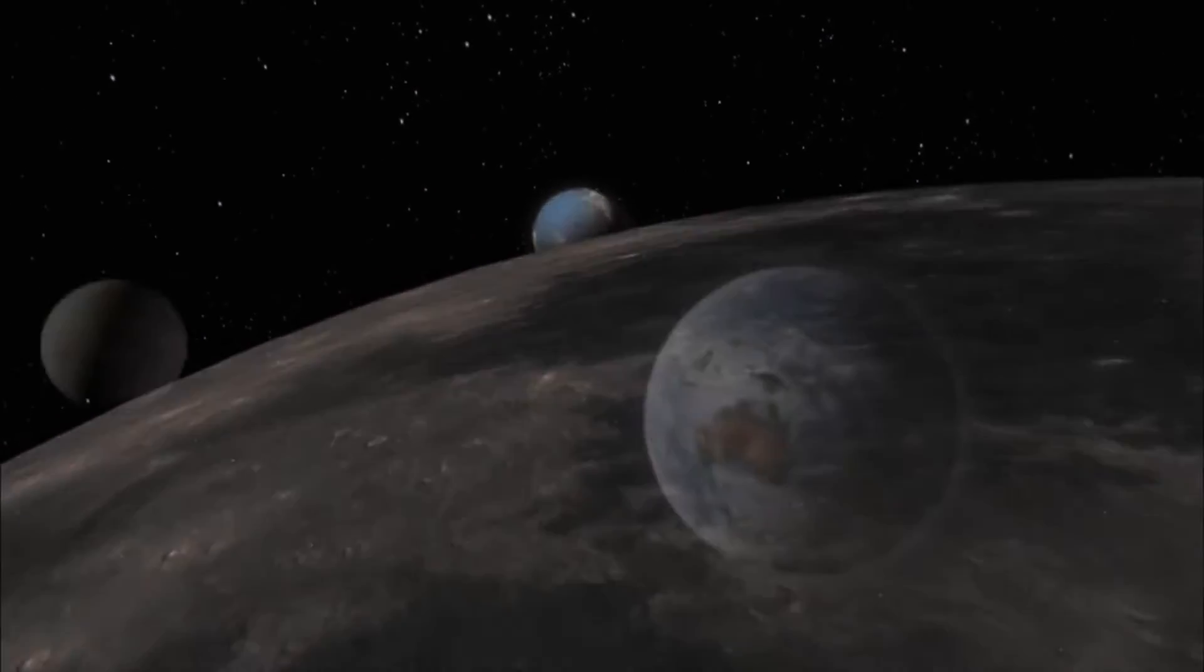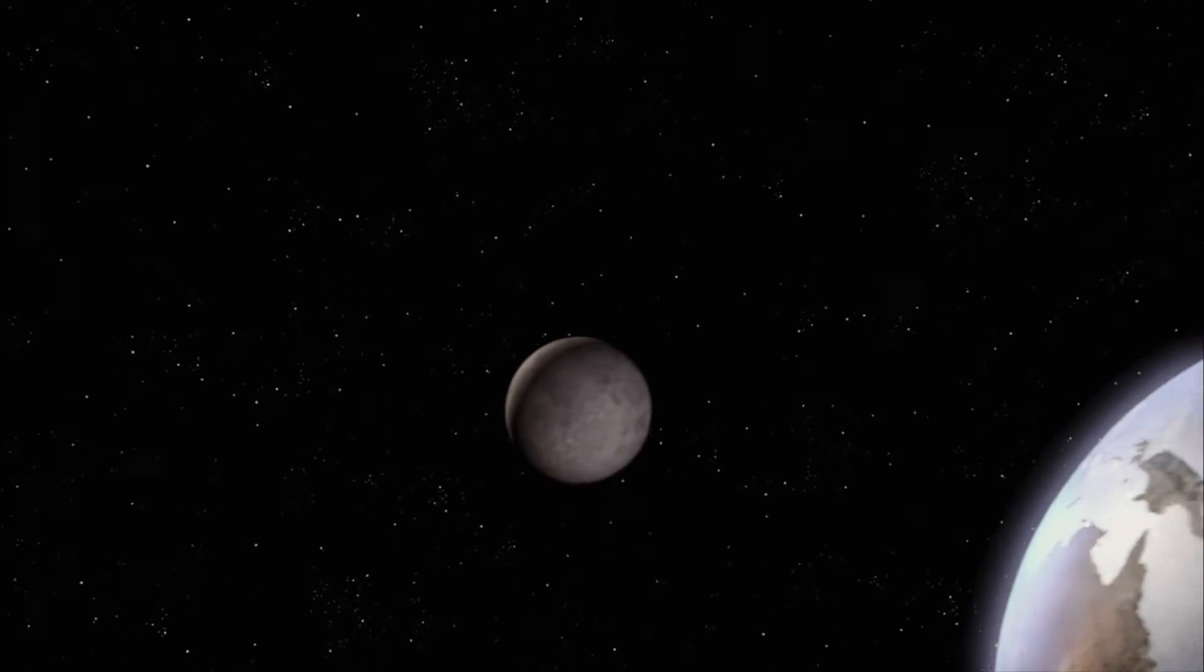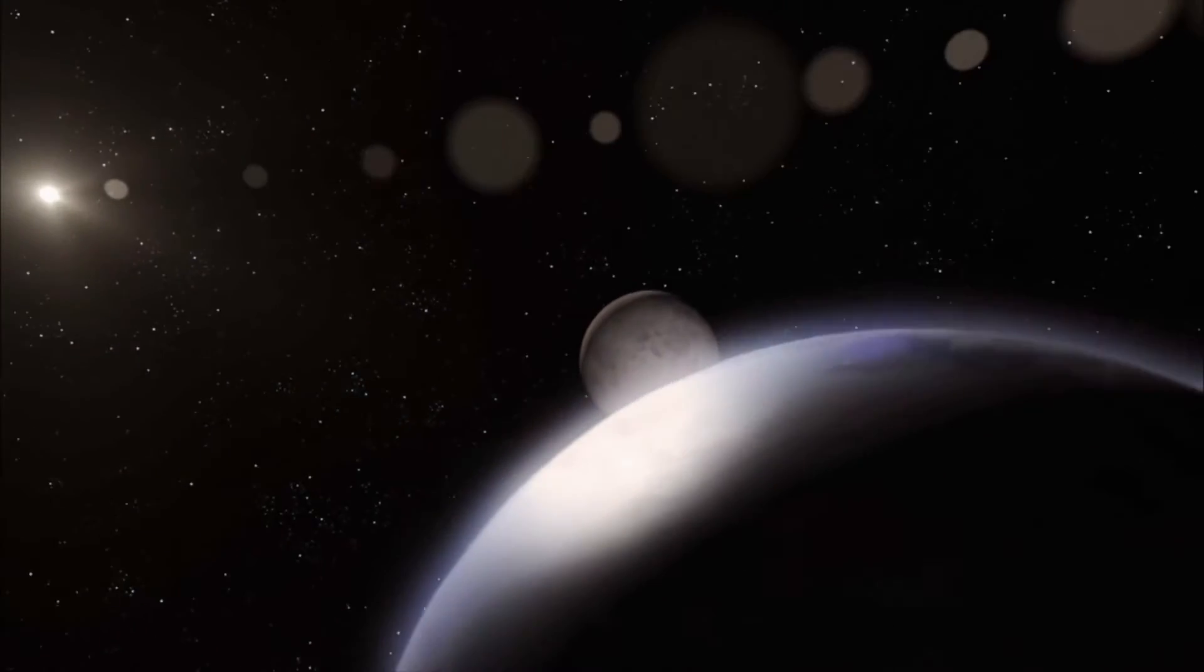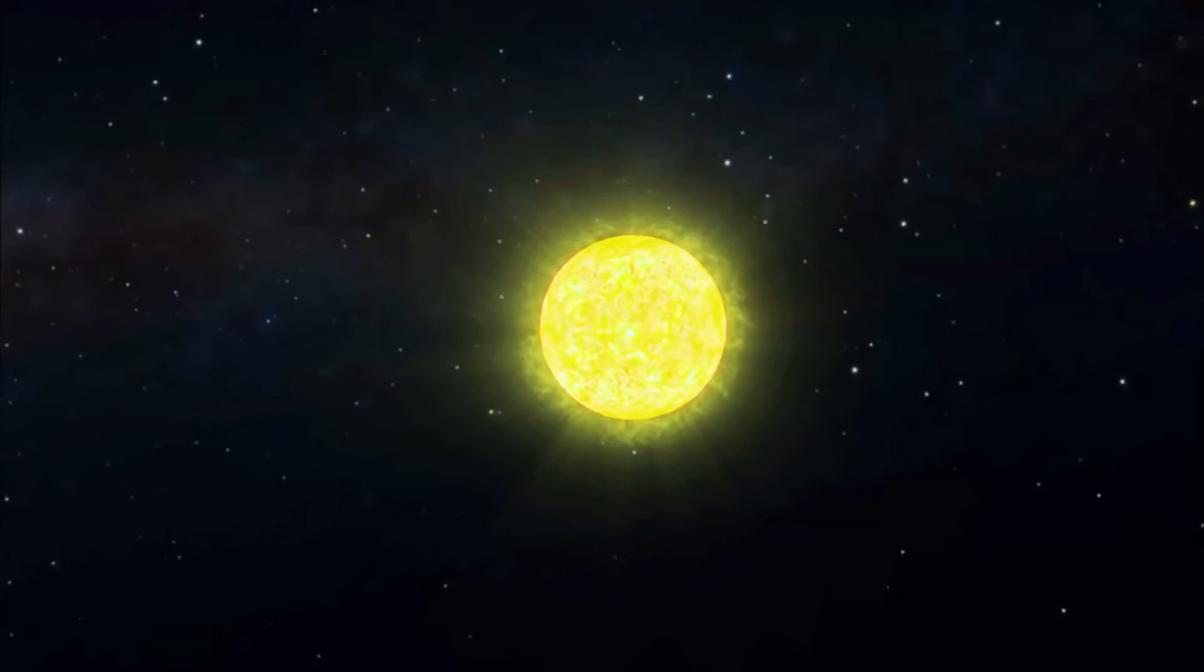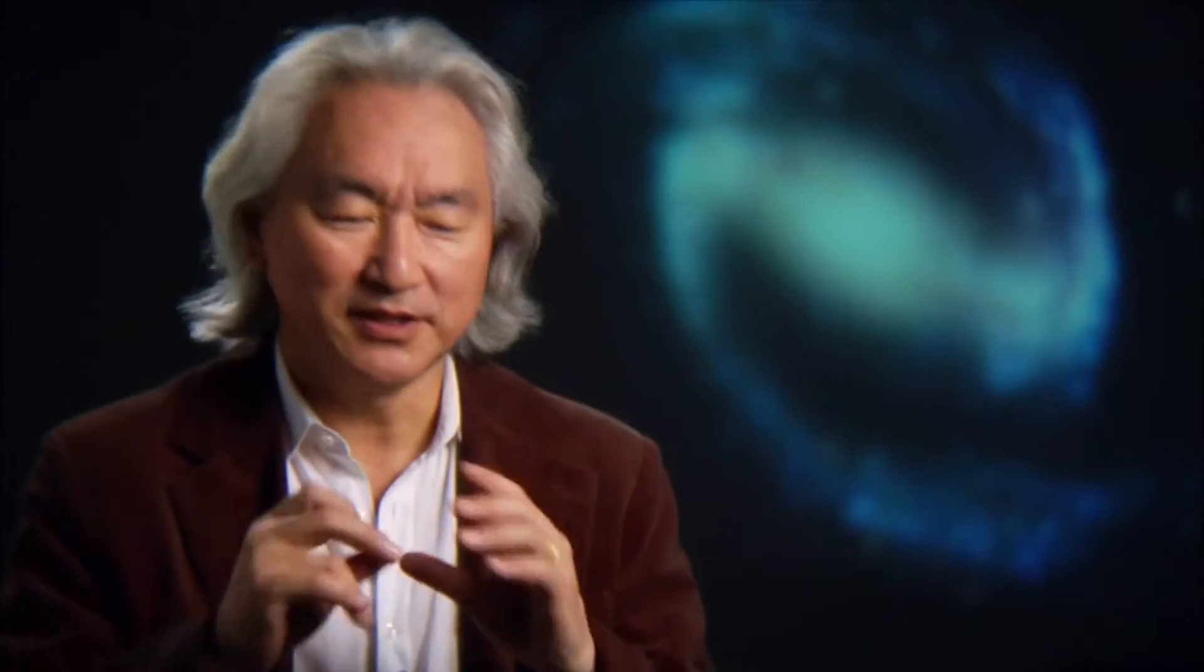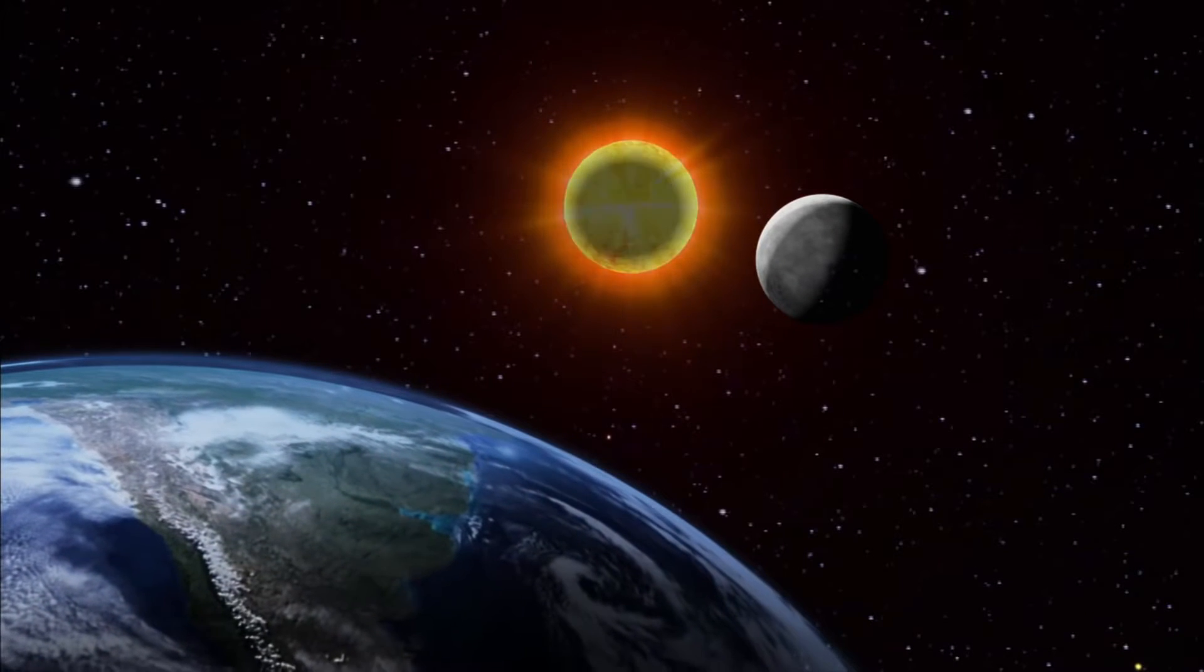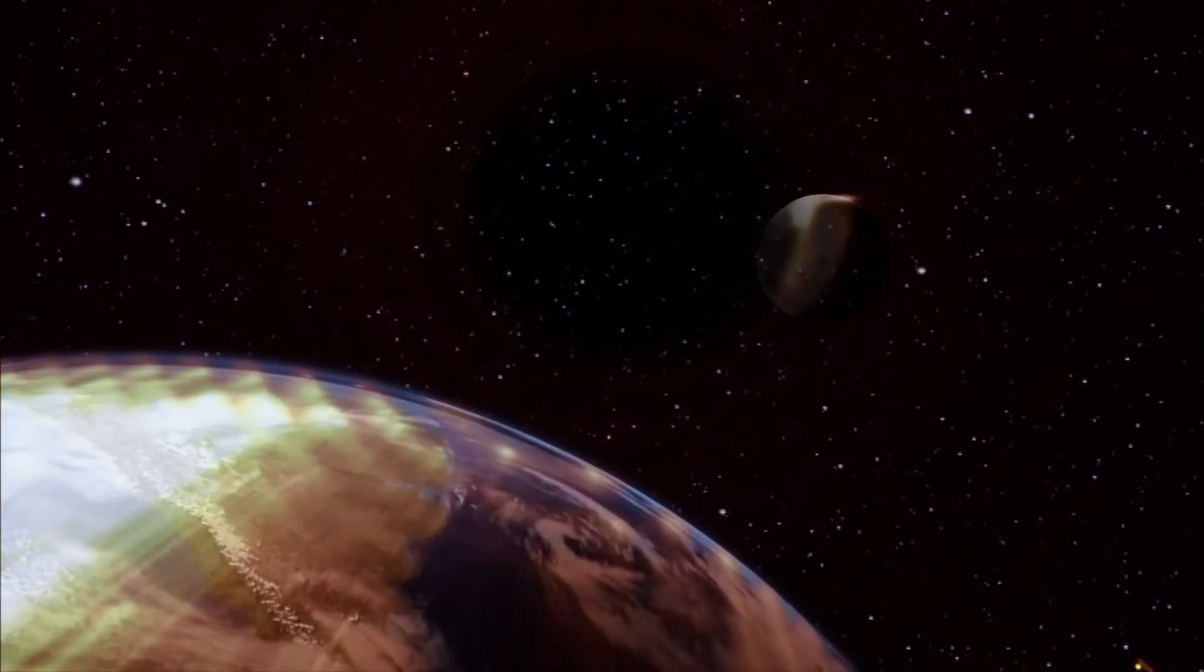The 1.3 seconds it takes light to travel from the Earth to the moon is pocket change compared to other celestial bodies. Light from the sun, for instance, takes more than eight minutes to get to the Earth. If the sun were to disappear right now, if the sun were to suddenly vanish, it would take eight minutes before we would even feel the shockwave and see the effects of a disappearing sun.